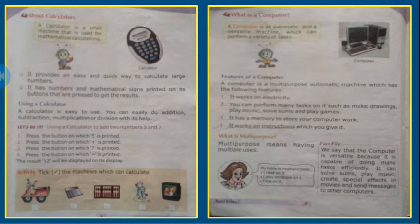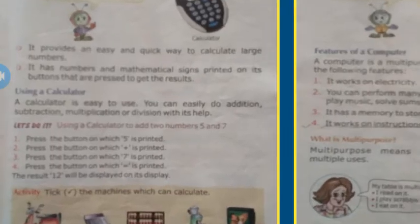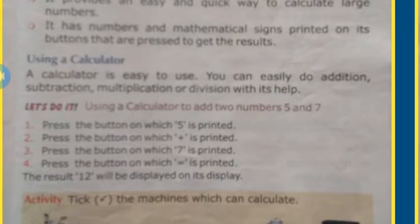Using a calculator is easy. Suppose you want to add two numbers, five and seven. First, you press five. Then you press the plus button. Then you press seven. In the fourth step, you press the equal sign. Now the result will be ready and shown on the screen — twelve will be displayed on the display.